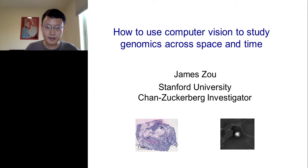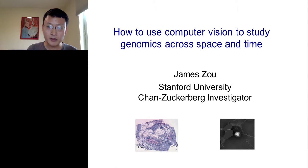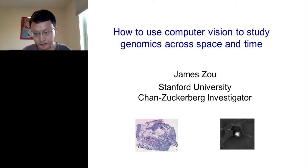Hi, everyone. My name is James So. I am an assistant professor at Stanford University, and I will tell you a little bit about some of the recent work that we've been doing in developing computer vision algorithms to study genomics, and in particular to study genomics across different spatial variations and also across temporal variations. This will also be an opportunity to give a tutorial of how we can leverage some of the recent advances in deep learning or computer vision.